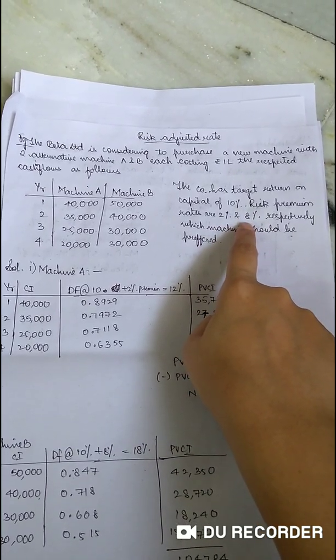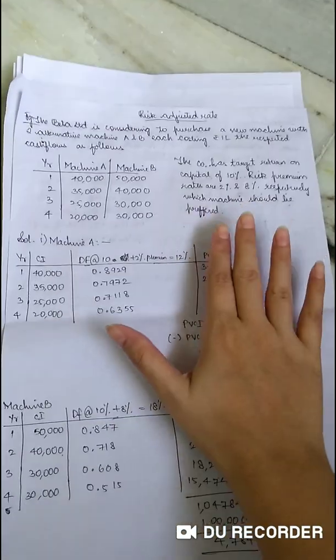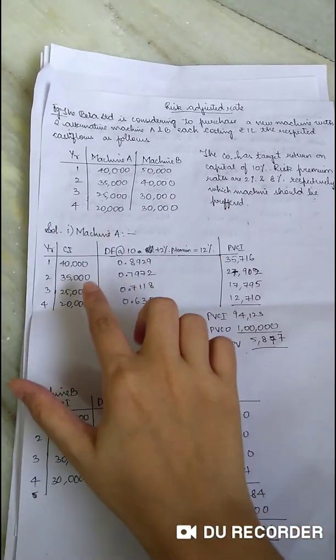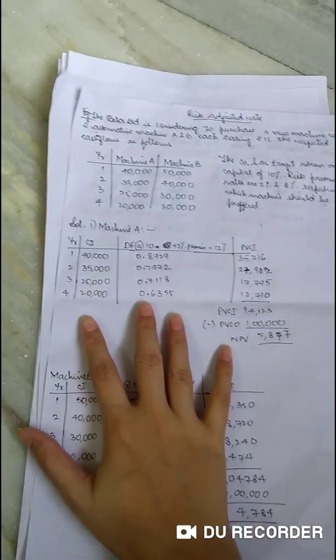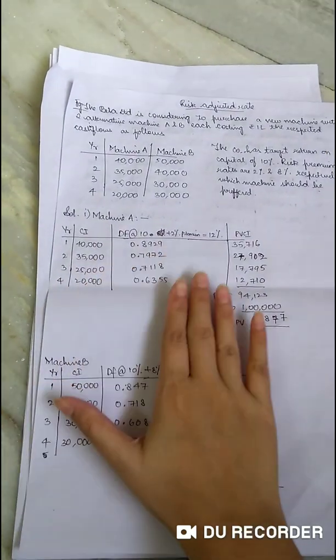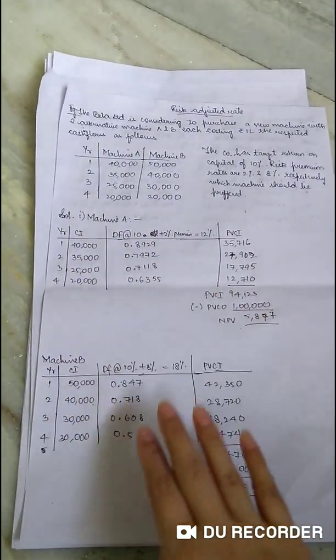So for machine A, 10 plus 2, that is 2% is your premium, and for machine B it is 10 plus 8, that is at 18%, right? Now it is a similar way how you do your NPV by multiplying the discounting factor. Over here, first we will do it for machine A and then we will do it for machine B.